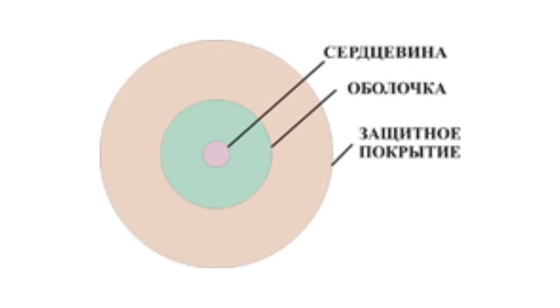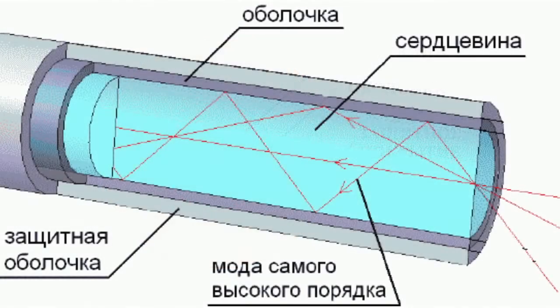The light-guiding fiber consists of a core and a protective glass shell, which serves as a reflective layer. With the help of this layer, the signal is kept inside the core.